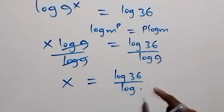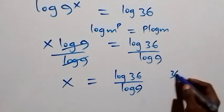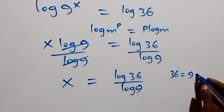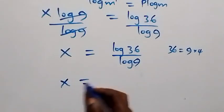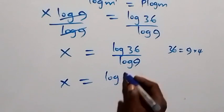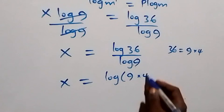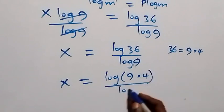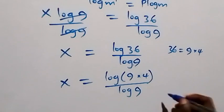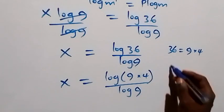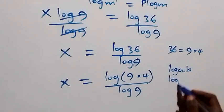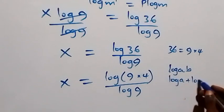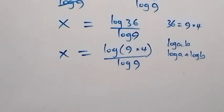We can write 36 as 9 times 4. Then what we have becomes x equals to log of 9 times 4 over log 9. From the law of logarithms, log of a times b is the same thing as log a plus log b.